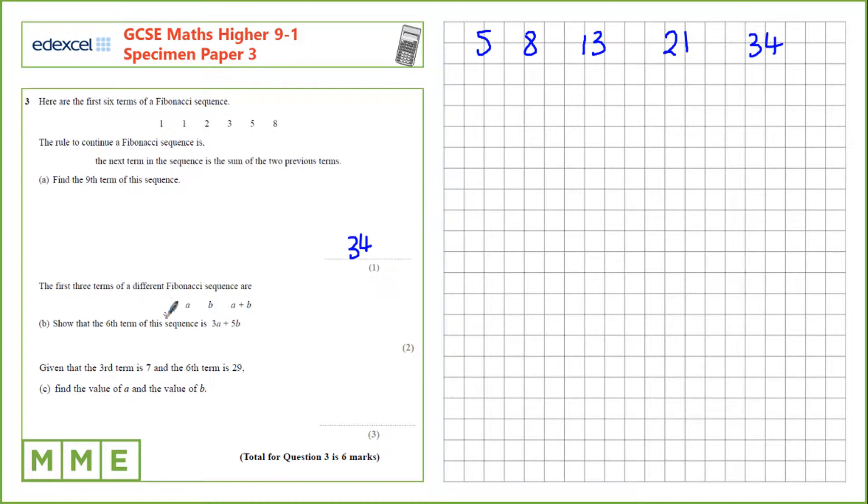The first three terms of a different Fibonacci sequence are a, b, and a plus b. We need to show that the sixth term of this sequence is 3a plus 5b. They've already calculated the third term for us, so let's calculate the fourth.